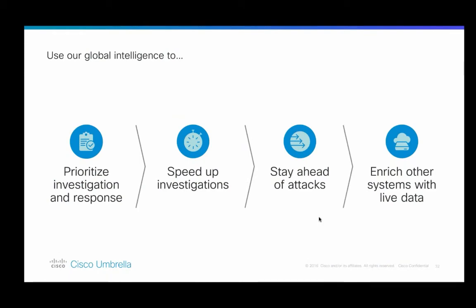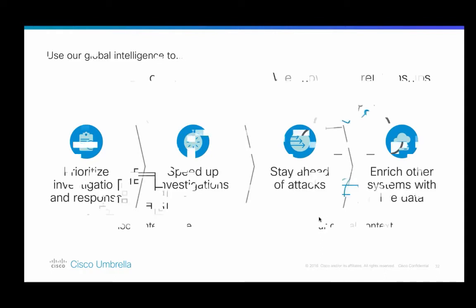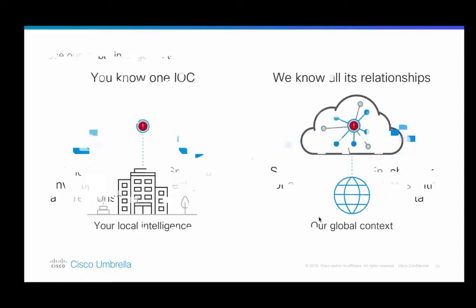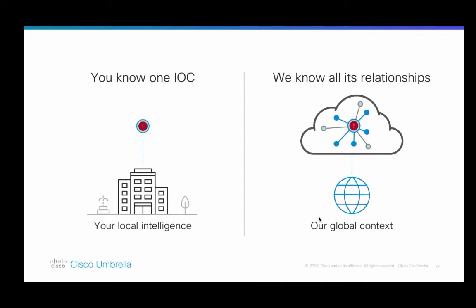You can use our scores to prioritize investigation and response by focusing on the most suspicious or bad-scoring domains first. You can also use our association data to speed up investigations by reducing time to remediation — understanding very quickly what's going on with a domain — and then pivot around your attacker's infrastructure to help stay ahead of those attacks even before they're targeting you. And of course, with our API you can enrich other systems like your internal systems, Anomaly, or your SIEM with live context around what's happening globally on the internet.